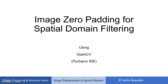Hello and welcome. In this video we are discussing the image zero padding algorithm for spatial domain filtering, to implement it in OpenCV Python using PyCharm IDE. In image enhancement or many image processing operations in the spatial domain, we use filtering operations — that is, we are convolving our image with a kernel, and this kernel depends on the filtering action.